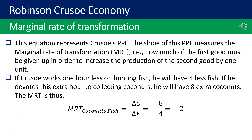Marginal rate of transformation: the equation F/4 + C/8 = 12 represents Crusoe's PPF. The slope of this PPF measures the marginal rate of transformation — that is, how much of the first good must be given up to increase the production of the second good by one unit. If Crusoe works one hour less on hunting fish, he will have 4 less fish; if he devotes this extra hour to collecting coconuts, he will have 8 extra coconuts. The MRT thus equals ΔC/ΔF = −8/4 = −2.